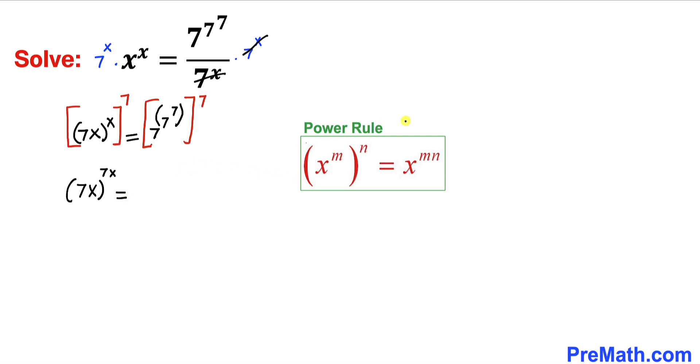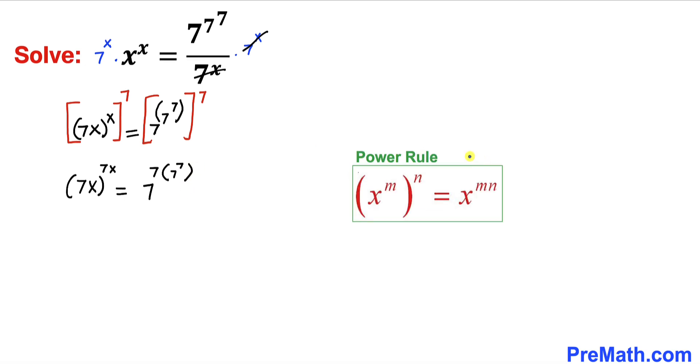Let's apply the same power rule on the right hand side. The right hand side could be written as 7^(7×7) inside the parentheses. If we apply this power rule once again on the right hand side, this could be easily written as 7^7 whole power 7^7.